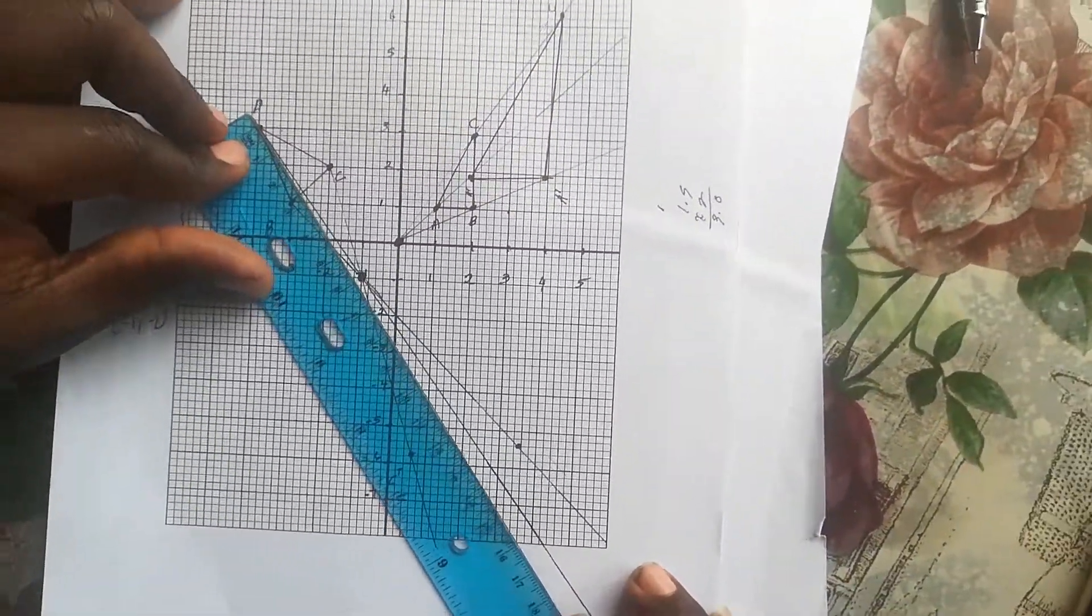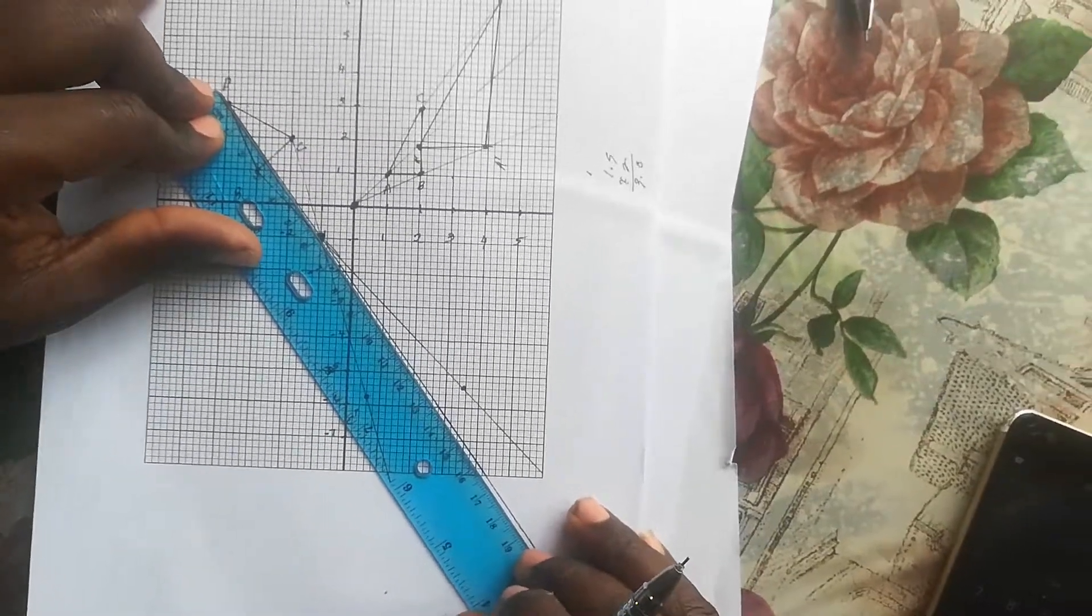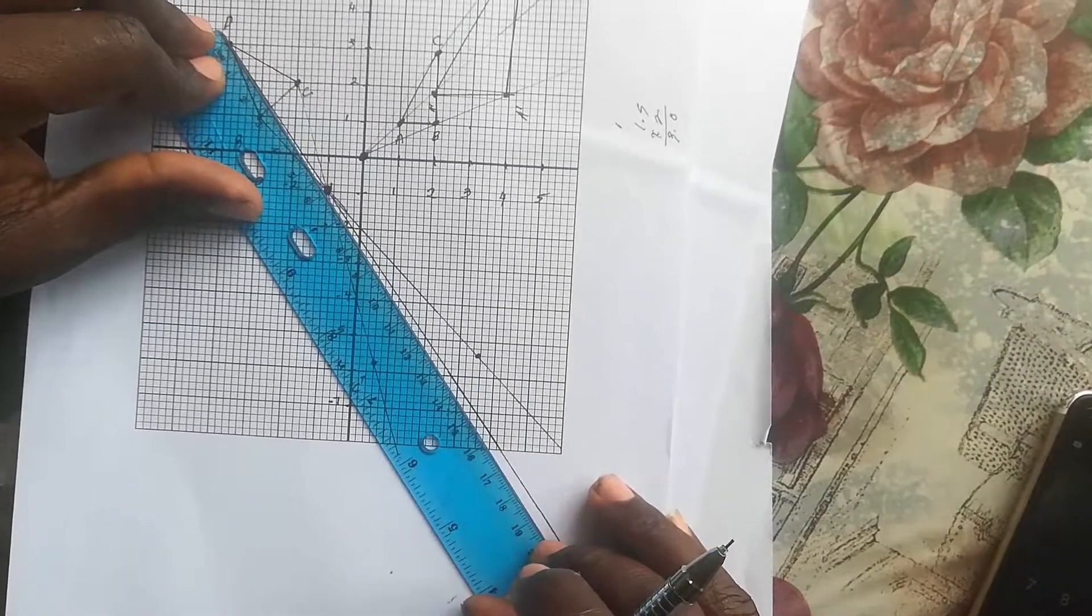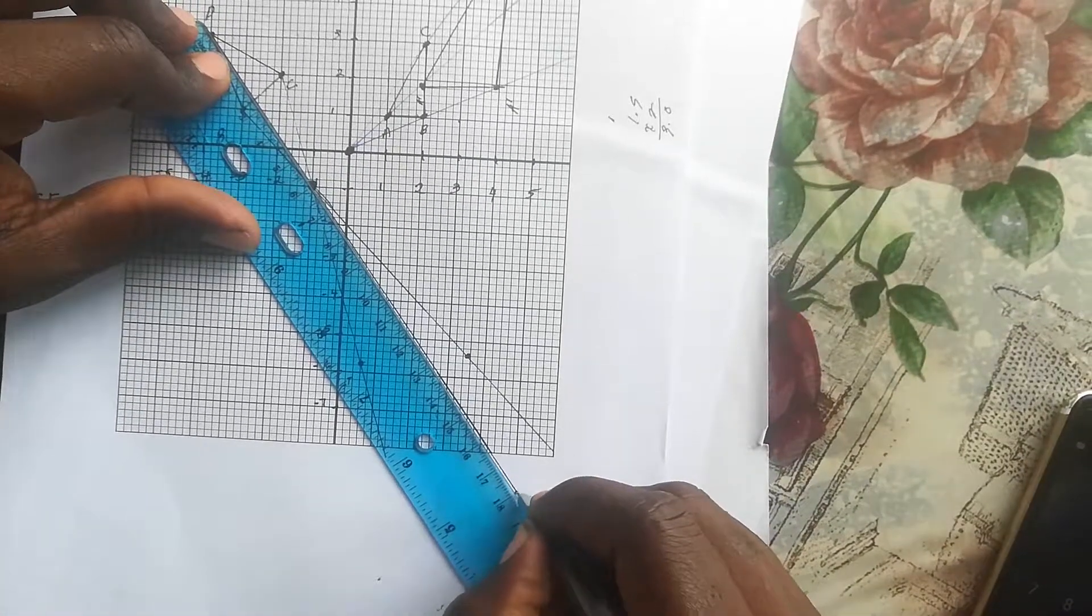From D to our center is 6, and 6 times 3 is 18, so let's find 18 and mark it here.